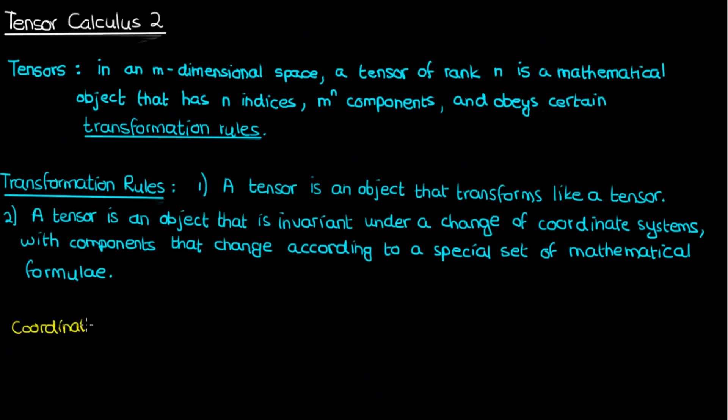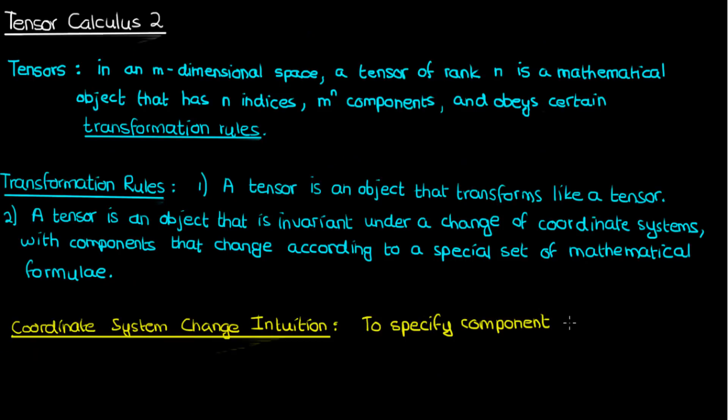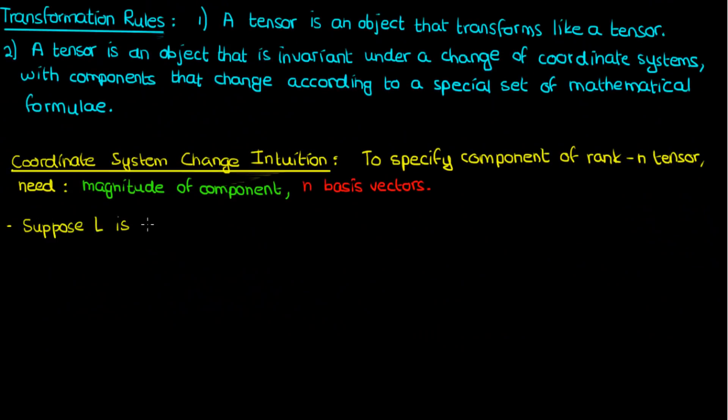Okay, so how can we intuitively picture what happens to a tensor when we change coordinate systems? Well, recall that in the last video I talked about how in order to fully specify a component of a rank n tensor, you need to specify the magnitude of that component as well as the n basis vectors corresponding to that component. You can, of course, then repeat this process for all the components of the tensor to fully specify the whole tensor.